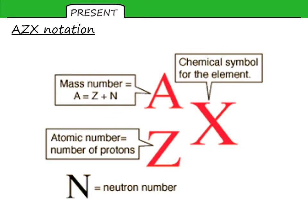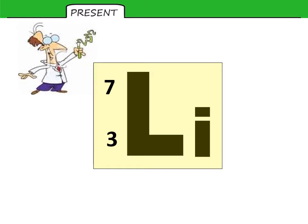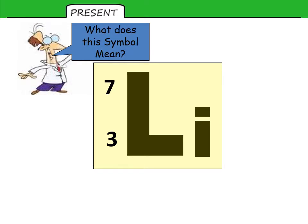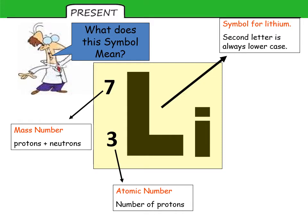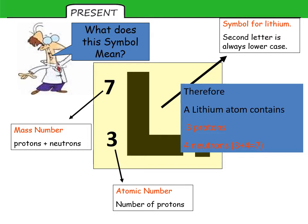We will be using what's called AZX notation in lessons in physics and in chemistry, where A is the mass number, Z is the atomic number, which is the number of protons, and X represents the chemical symbol for an element. So if we look at lithium 73, we have a few things to look at. Lithium itself has a symbol Li, the second letter is always lower case. The smaller of the two numbers is the atomic number, and the larger one is the mass number, which is the sum of the protons and neutrons in an atom. To work out the number of neutrons, we subtract the atomic number from the mass number. So for lithium, that would give us a value of, you guessed it, four. So three plus four gives us seven, three protons and four neutrons.